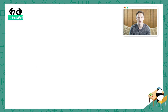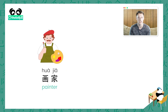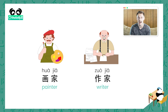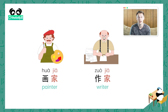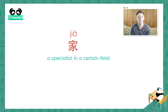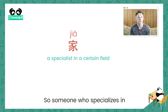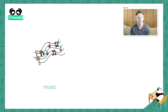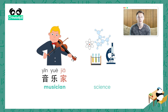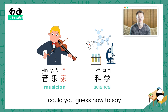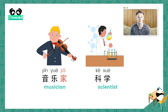Good job! Looking back at the words for painter, 画家, and writer, 作家 — did you notice both of these have the word 家 at the end? Here, 家 actually means a specialist in a certain field. So someone who specializes in music, 音乐, is called a musician, or 音乐家. So if I told you science is 科学, could you guess how to say scientist? 科学家. A scientist.